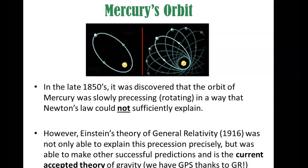Then Albert Einstein came up with a brand new theory of gravity called general relativity, published in 1916. People were able to use general relativity to explain this precession precisely within the uncertainty of the measurements. Furthermore, they could also use general relativity to backwards predict everything that Newton's law had predicted — in other words, it was more correct than Newton's law of gravity.